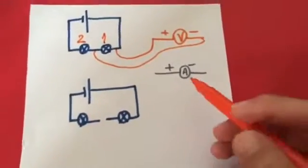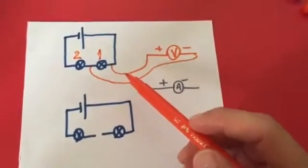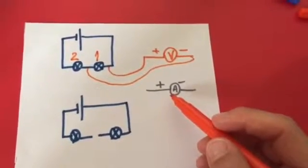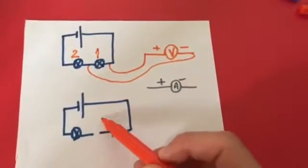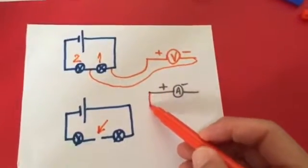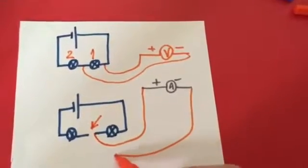Now, the second question is, how do you connect an ammeter across your circuit? I want you to keep in mind that the ammeter should be connected in series, and therefore you have to open your circuit and squeeze in your ammeter inside your circuit.